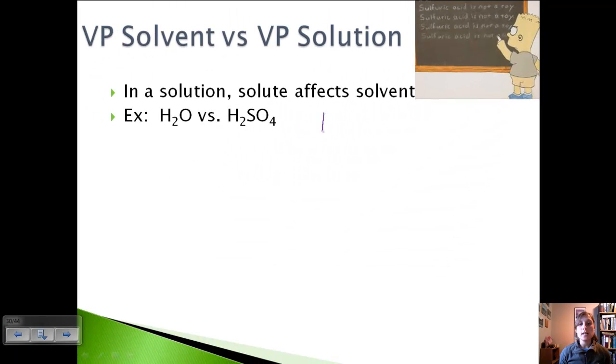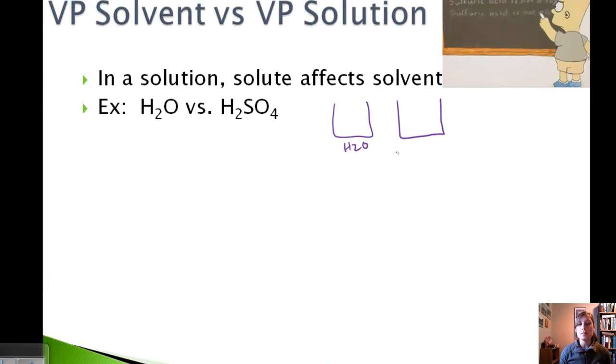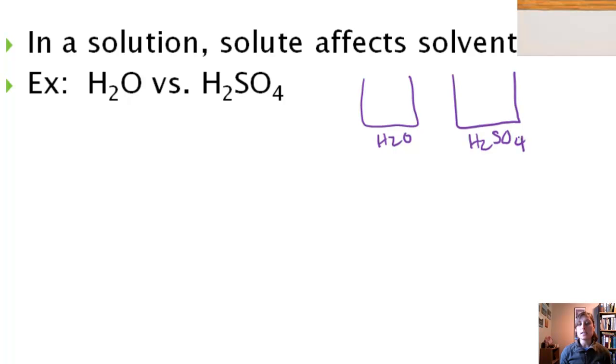Okay, so let's imagine that we have two beakers. One contains water, our solvent, and one contains a sulfuric acid solution. So we're going to say that's our solute and our solvent. What happens is the water particles, so if we have this in a totally contained chamber, water particles are going to eventually all go over to the sulfuric acid solution, leaving nothing in the water, and water and sulfuric acid over here.